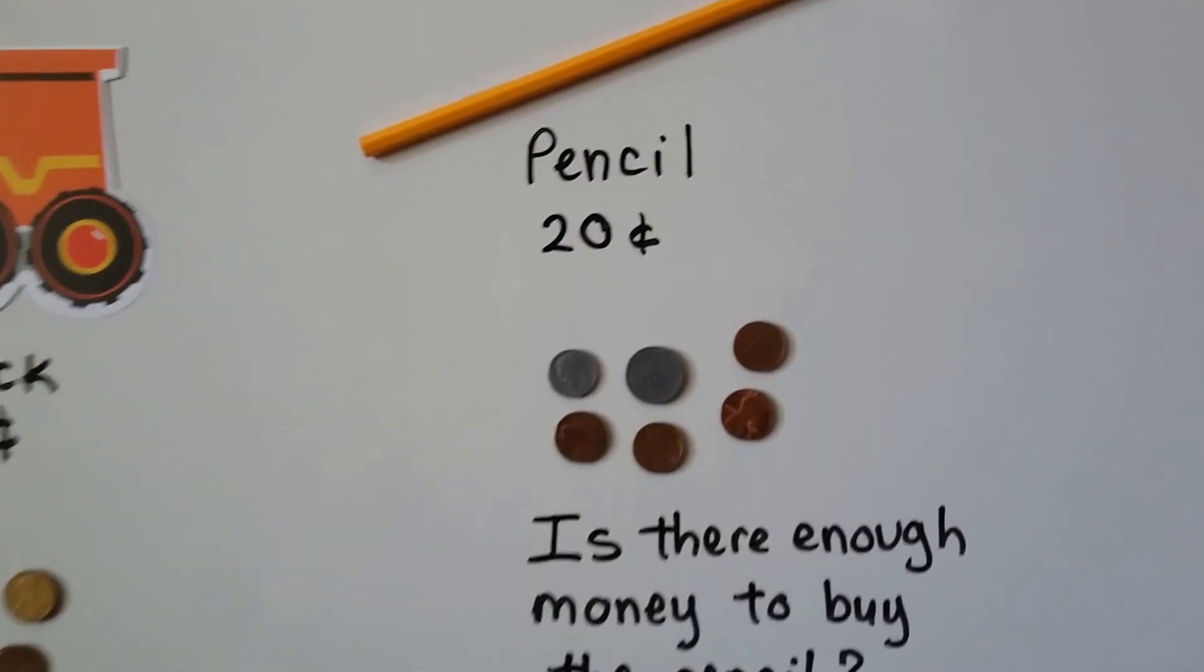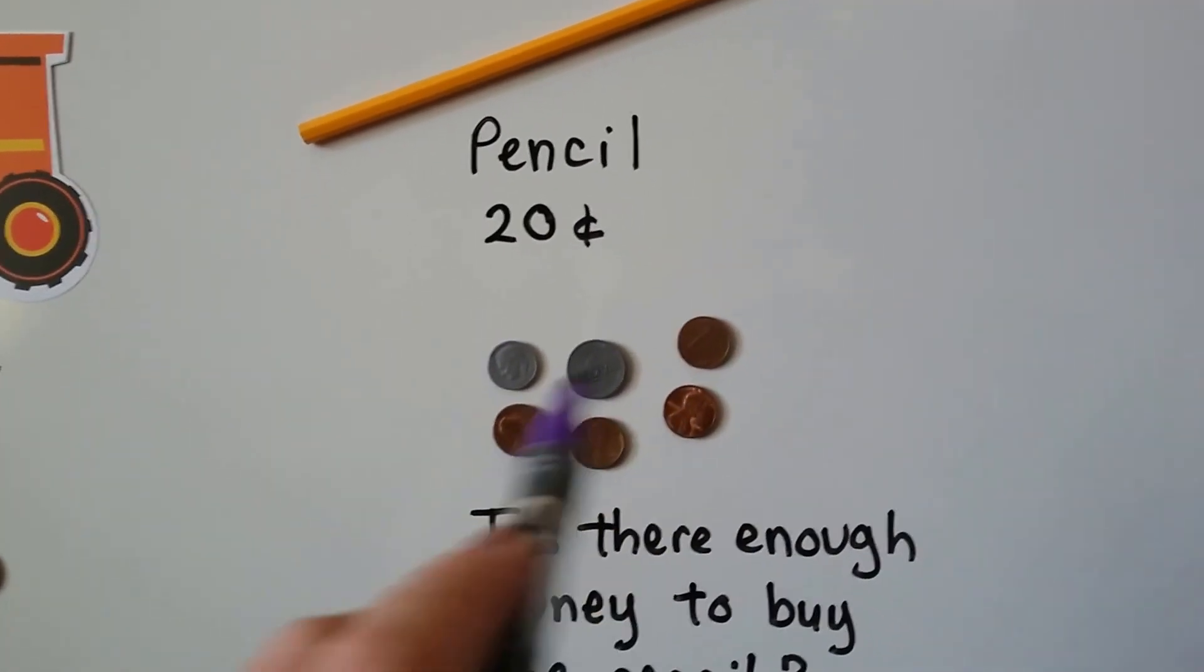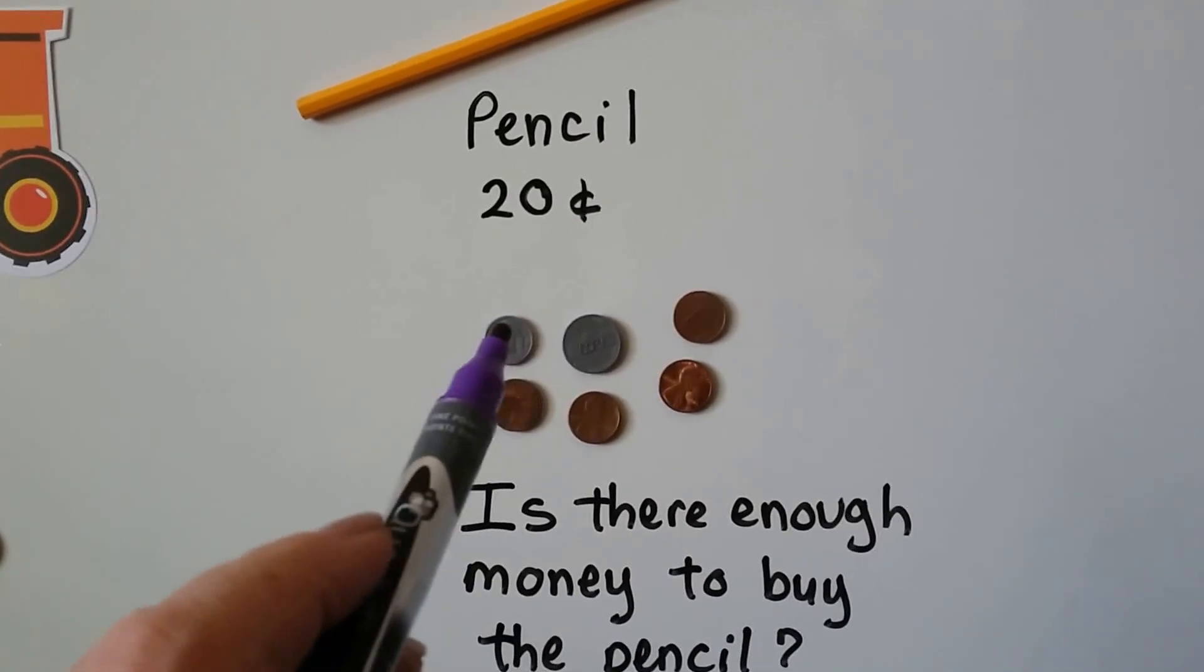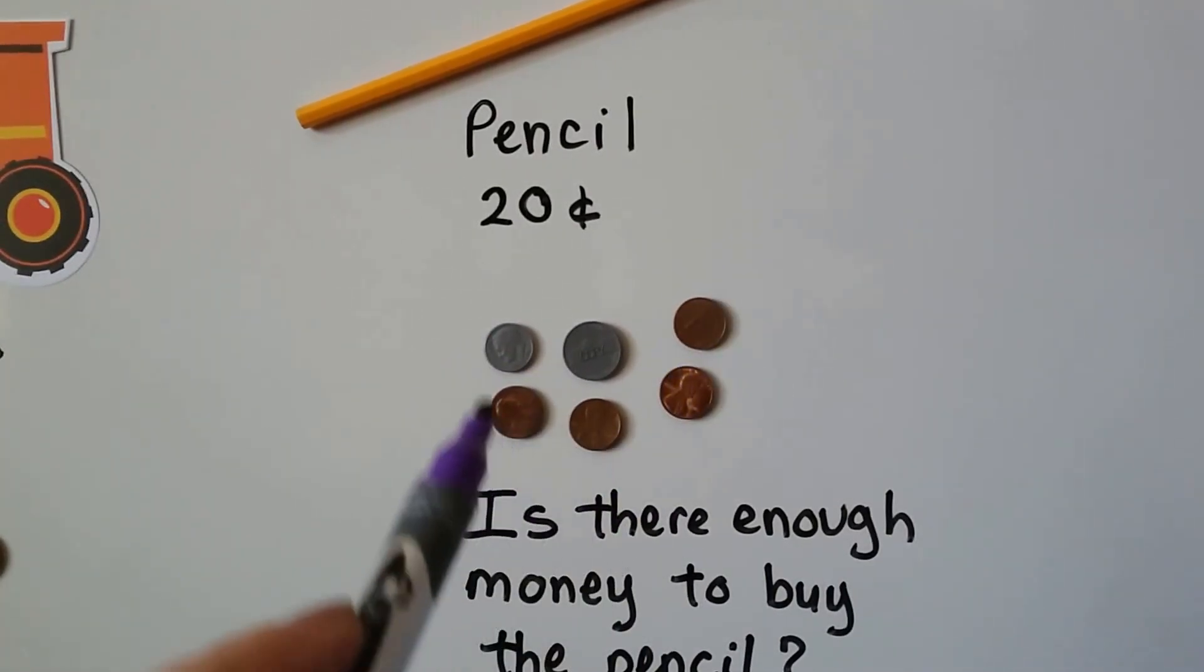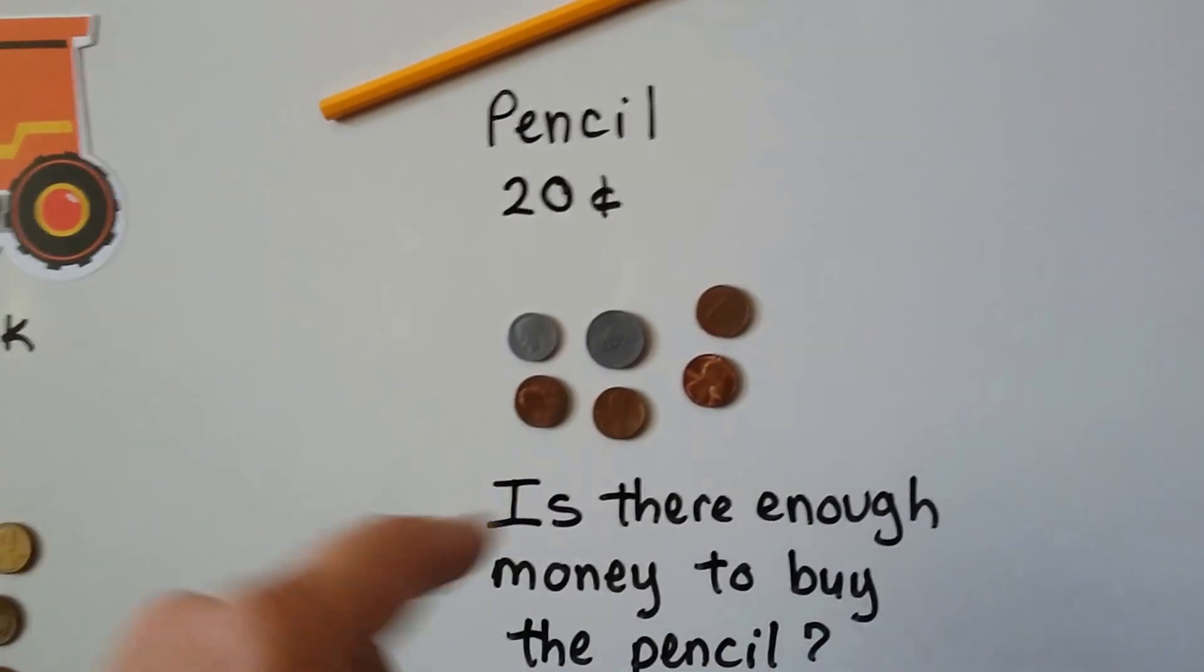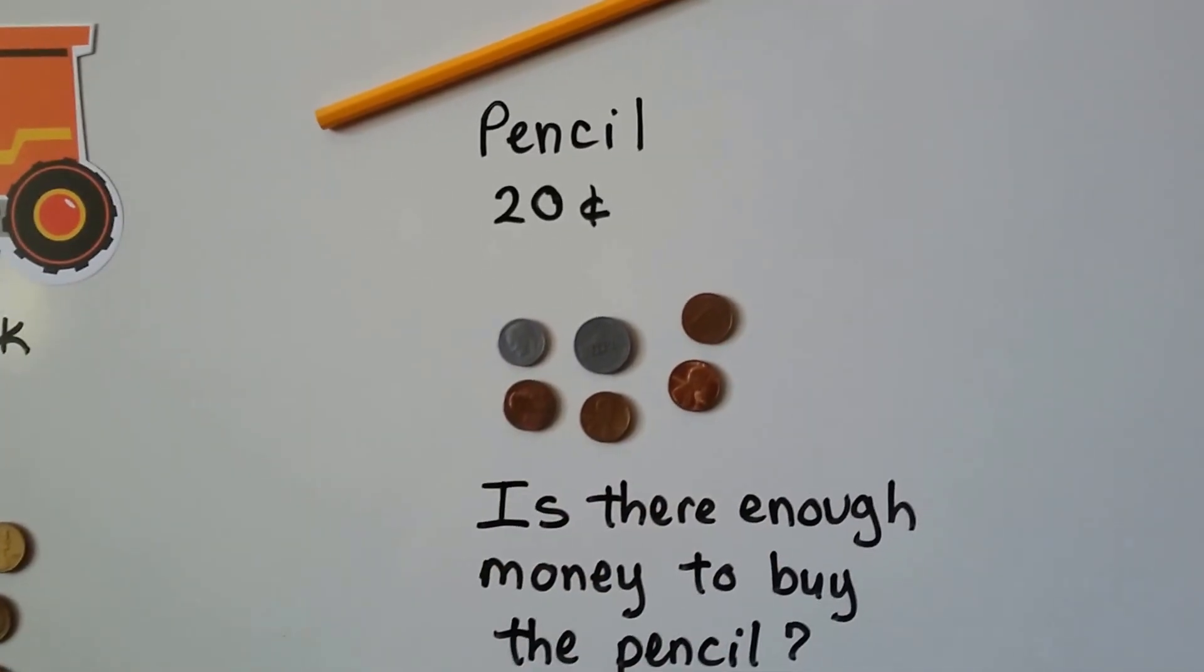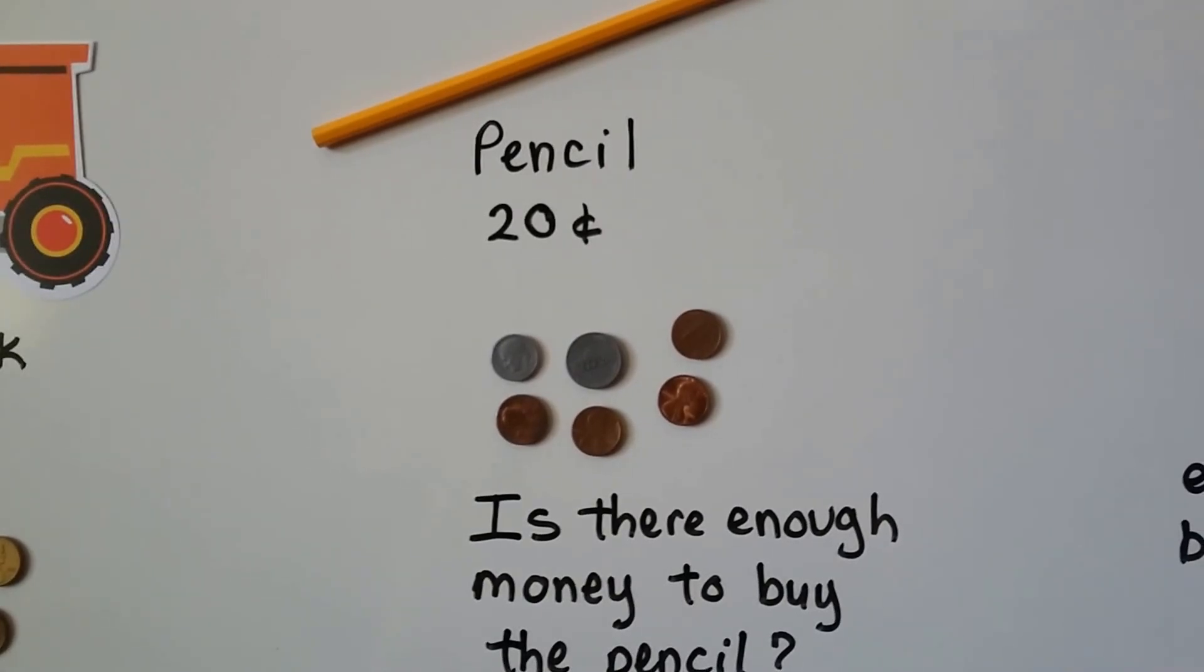Now we have a pencil. And the pencil costs 20 cents. Do we have enough money here to buy the pencil? Well, let's count. We have a dime. That's 10 cents. We have a nickel. That's 5 cents. And we have 4 pennies. That's 10. And 5 more is 11, 12, 13, 14, 15, 16, 17, 18, 19. Oh, we don't have enough to buy that pencil.